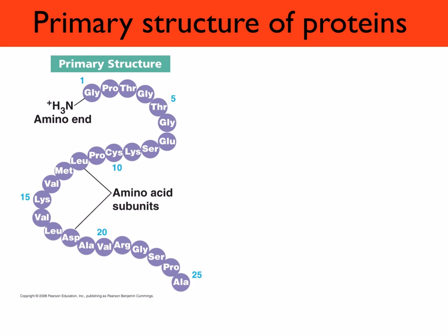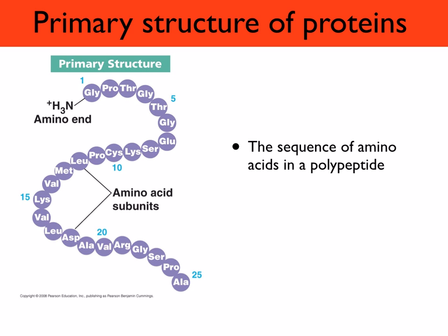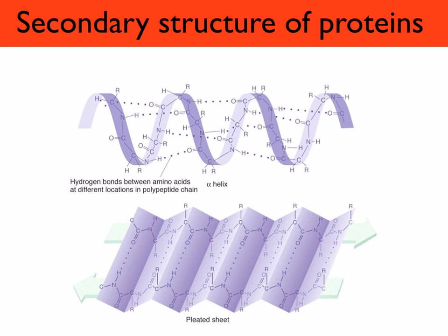The primary structure of a protein is the sequence of amino acids in its polypeptide. A simple protein can consist of a single polypeptide chain, however it's more common to find a protein made up of a number of polypeptide chains. The linked amino acids in a polypeptide have NH and CO groups on either side of every peptide bond, and both of these groups are polar so they can form hydrogen bonds with each other.